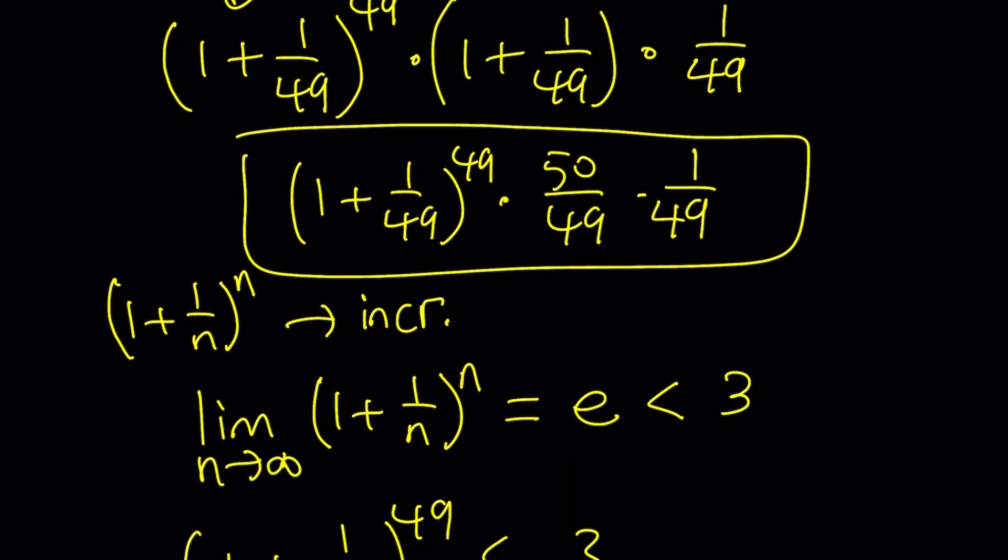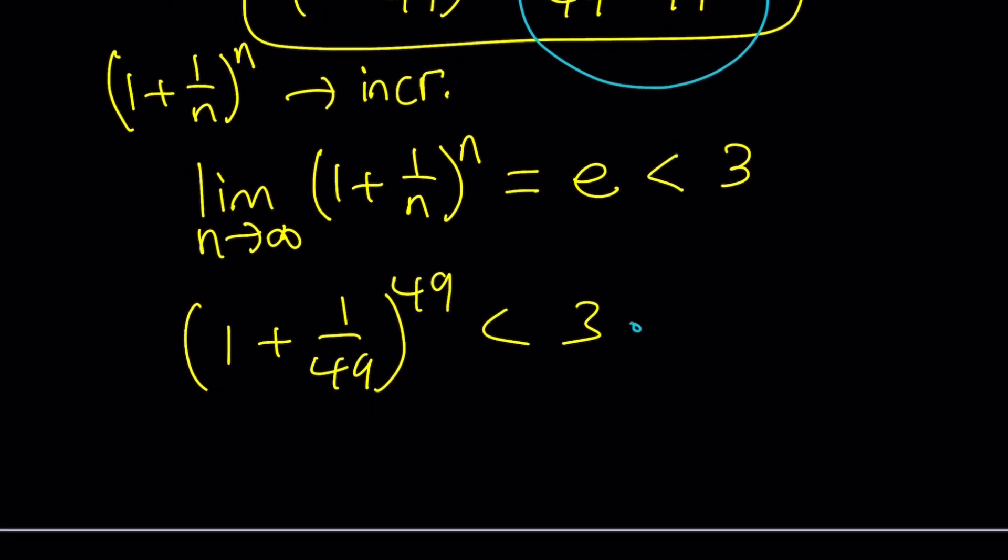Let's multiply both sides of this inequality by this product, which is 50 over 49 squared. The left-hand side gives us the original expression. On the right-hand side, we have 3 times 50 over 49 squared, which equals 150 over 49 squared.